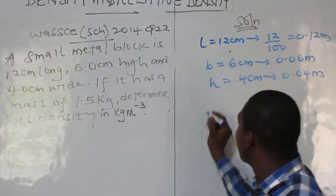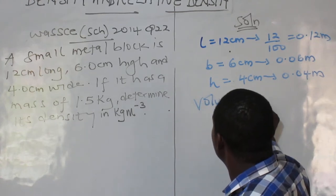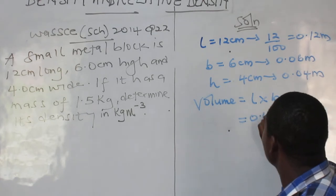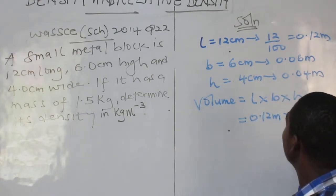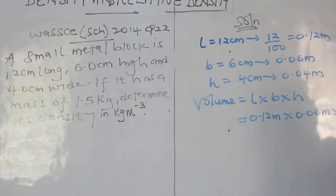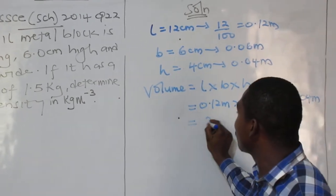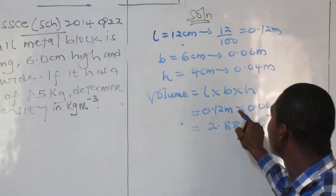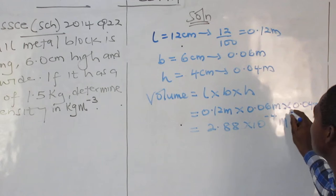Now I can get my volume here. Volume is defined as length times breadth times height. Now the length is 0.12 meter. The breadth is 0.06 meter. And the height is 0.04 meter. So this will give me 2.88 times 10 to the power minus 4. Meter, meter, meter will give you meter cubed.